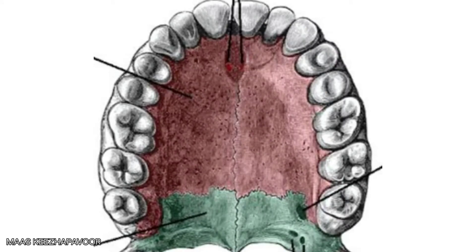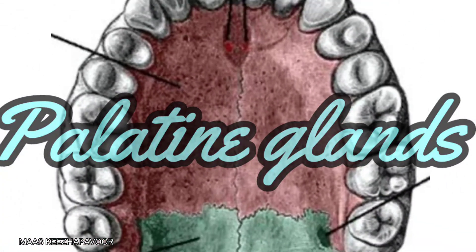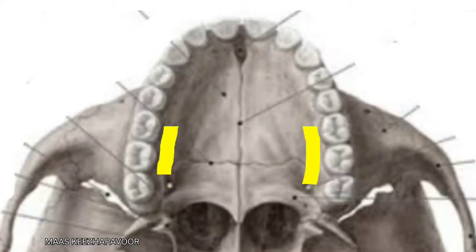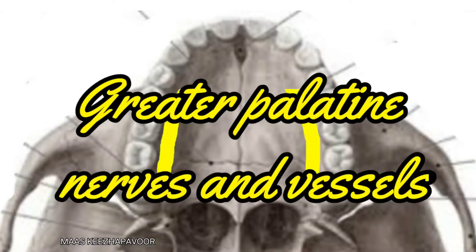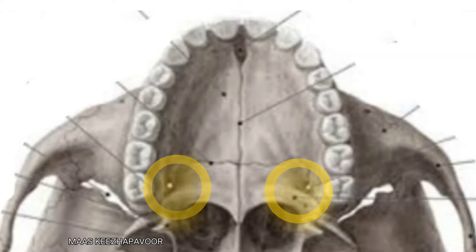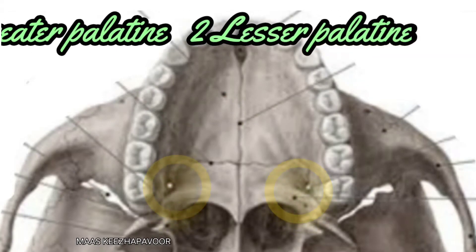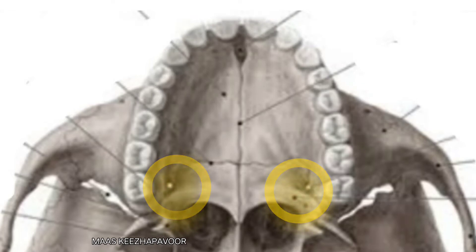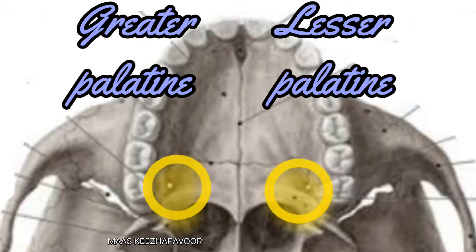The inferior surface of the hard palate is irregular and shows depressions which lodge palatine glands. Grooves extend on either side of the hard palate in the lateral aspect, from the greater palatine foramen to the incisive fossa, and lodge the greater palatine nerves and vessels. In the posterior lateral aspect of the hard palate, one greater palatine and two lesser palatine foraminae are present, transmitting the greater and lesser palatine nerves and vessels.